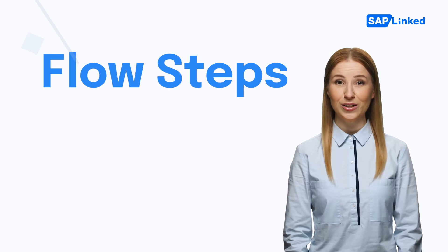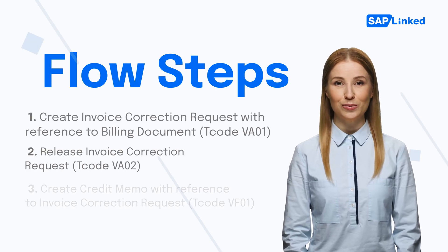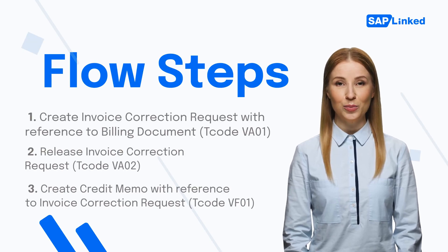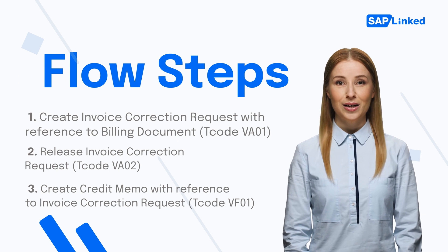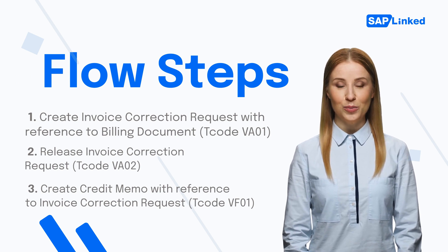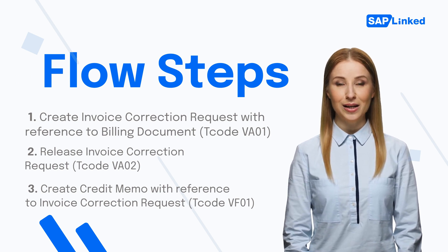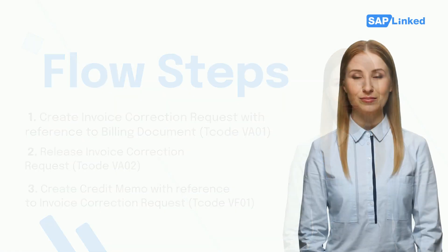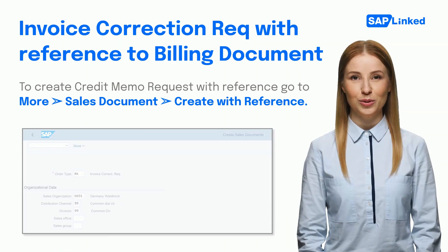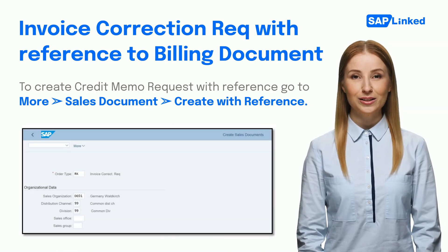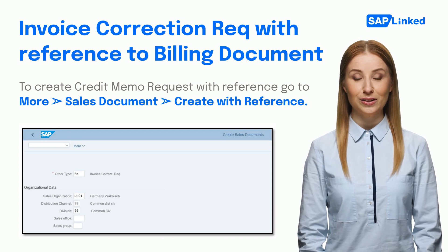Flow steps: First, create invoice correction request with reference to billing document. Second, release invoice correction request. Third, create credit memo with reference to invoice correction request. Enter T-code VA01 in the command field.